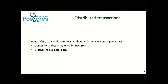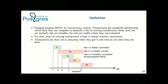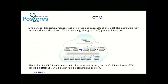Postgres uses multi-version concurrency control to implement isolation. When a transaction starts, it gets a snapshot listing running and not-yet-started transactions, so it knows what rows are visible. To assign snapshots, we keep an array of running transactions in memory. For a distributed version, we may use a GTM — Global Transaction Manager — approach: a single node that tracks running transactions, assigns XIDs and snapshots. There are projects using this approach, but it doesn't scale well for OLTP workloads.